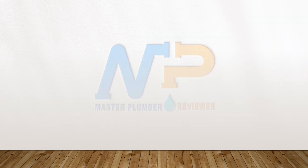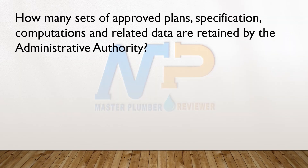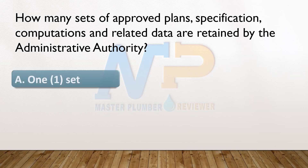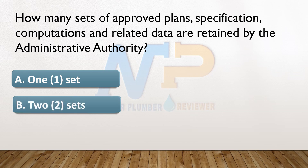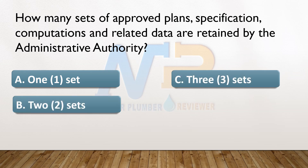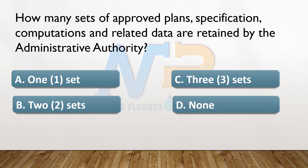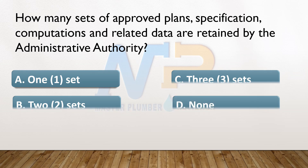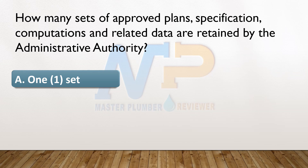How many sets of approved plans, specifications, computations, and related data are retained by the administrative authority? A. One set. B. Two sets. C. Three sets. D. None. The answer: A. One set.